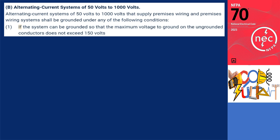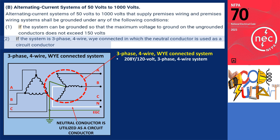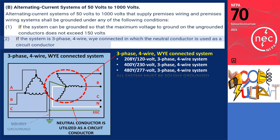For condition 2, if the system is three-phase, four-wire, Y-connected in which the neutral conductor is used as a circuit conductor. This condition is satisfied by common systems such as the 208Y/120-volt, three-phase, four-wire system; the 400Y/230-volt, three-phase, four-wire system; and the 480Y/277-volt, three-phase, four-wire system. In these systems, the neutral conductor is utilized as a circuit conductor, necessitating that all three-phase, four-wire, Y-connected systems operate with the neutral conductor solidly grounded.